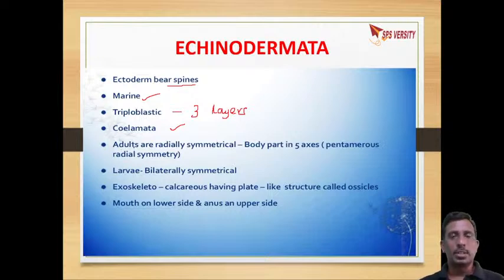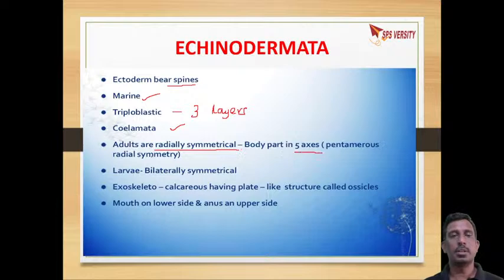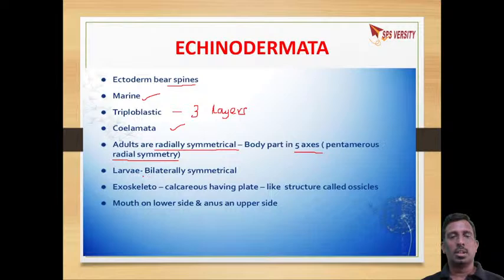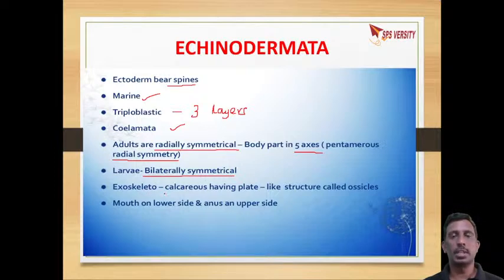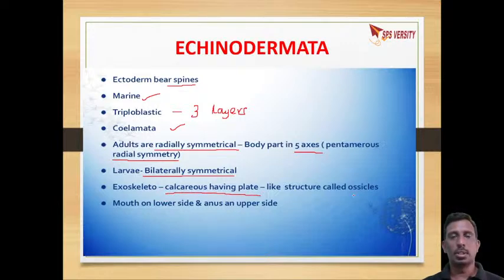When we come to symmetry, adults are radially symmetrical — the body can be divided in five planes, which is called pentamerous radial symmetry. Larvae, however, are bilaterally symmetrical. The body is covered by an exoskeleton which has calcareous plate-like structures called ossicles.